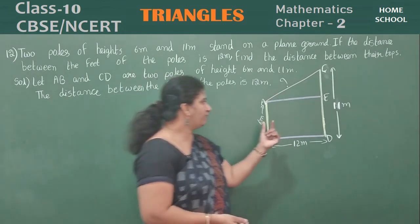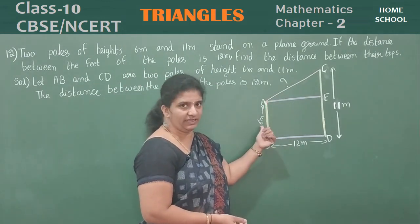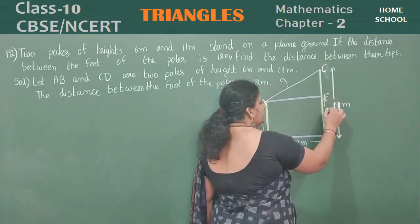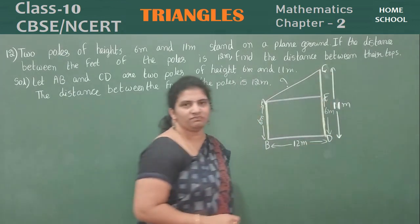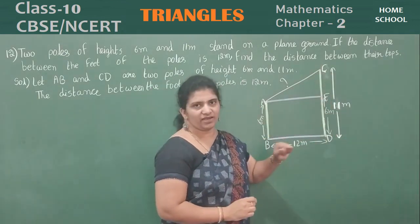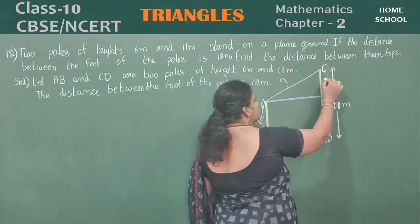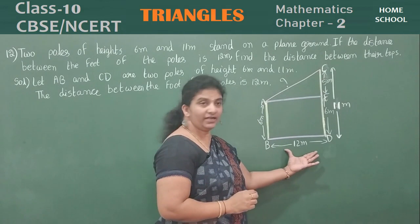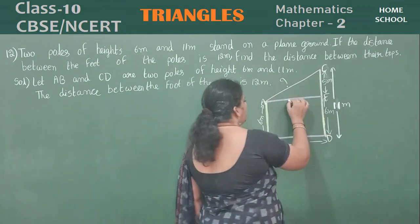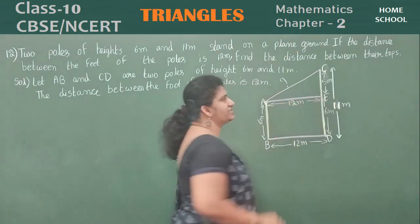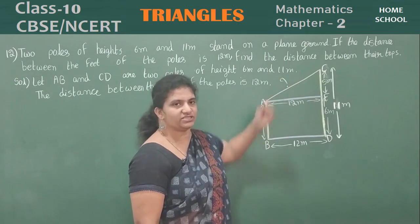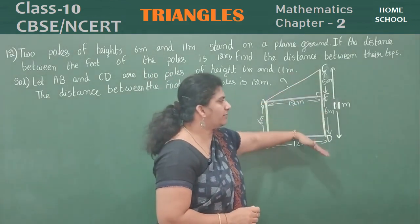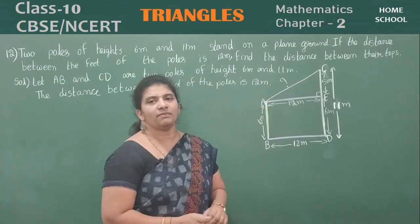To find AC, look carefully. The shorter pole is 6 meters, so I draw a horizontal line at that level. That gives DE = 6 meters. The total height of the taller pole DC is 11 meters, so EC = 11 − 6 = 5 meters. The horizontal distance AE = BD = 12 meters. The poles are perpendicular — they create a right triangle. Forget the bottom part and consider only the right triangle AEC; apply Pythagoras theorem to get the answer.